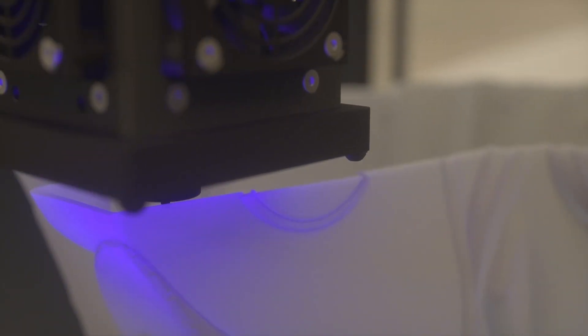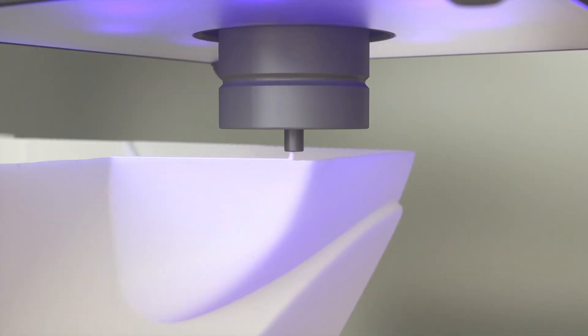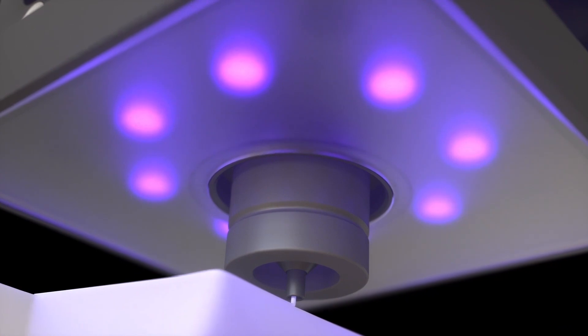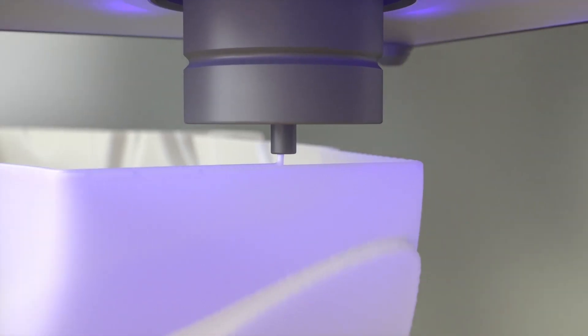The printing head on Massivit 3D printers contains a dispensing unit which jets photopolymer printing gel that is instantly cured by a 360-degree UV light system.